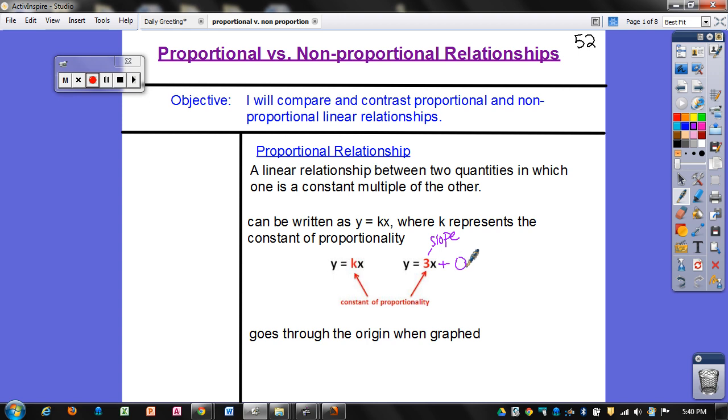And then the y-intercept is really 0. But we don't have to write plus 0, you just leave it blank. So instead of calling it slope, now we're calling it the constant of proportionality whenever the y-intercept is 0.